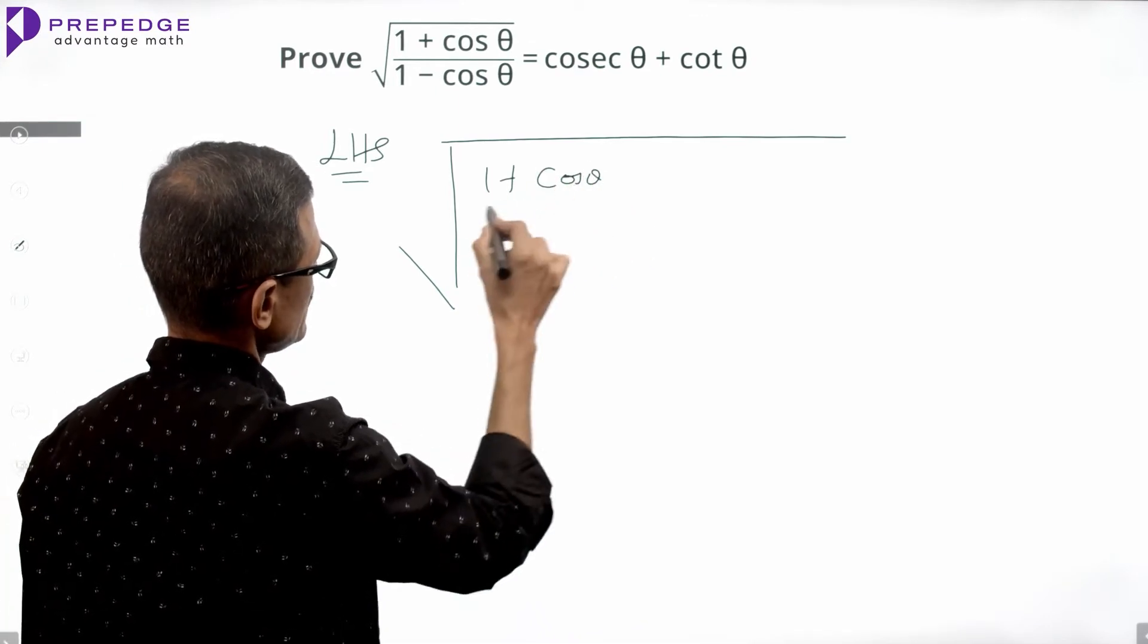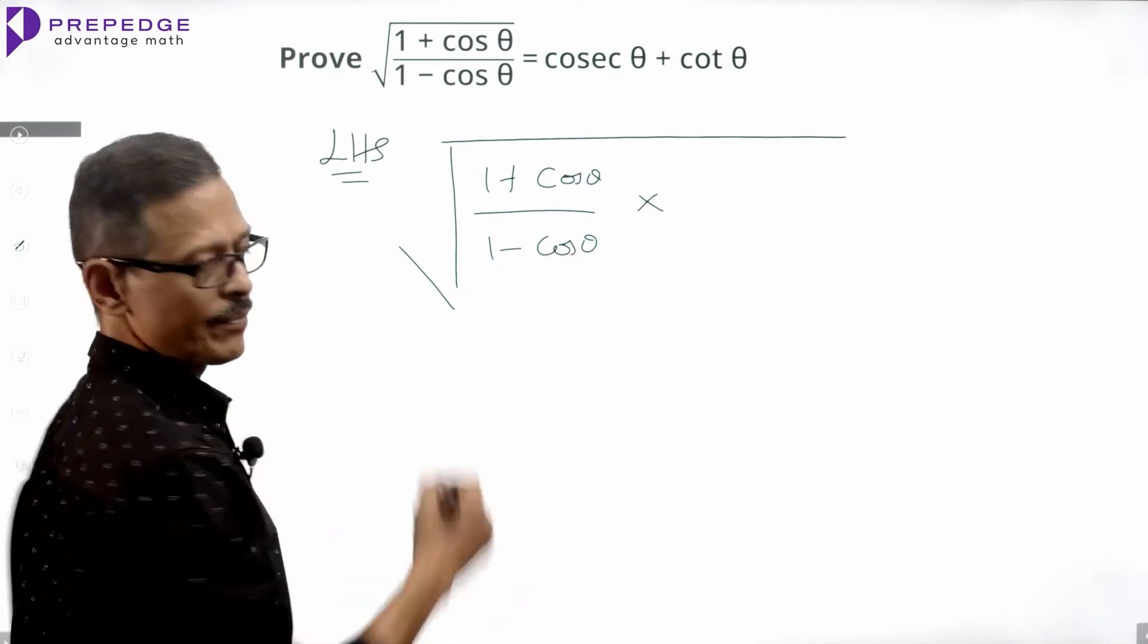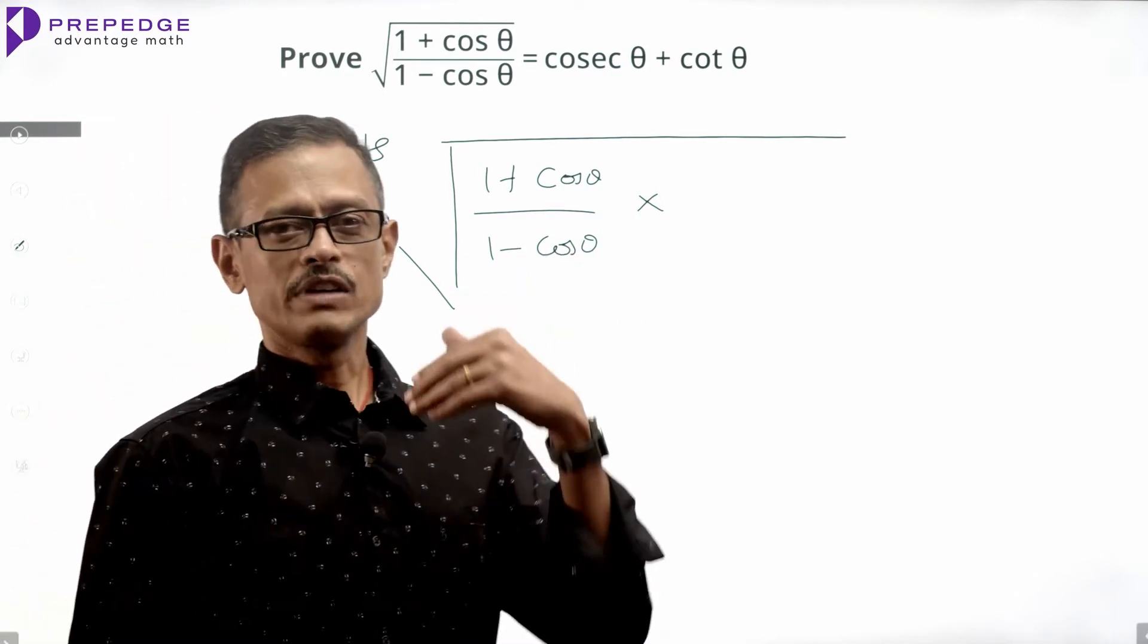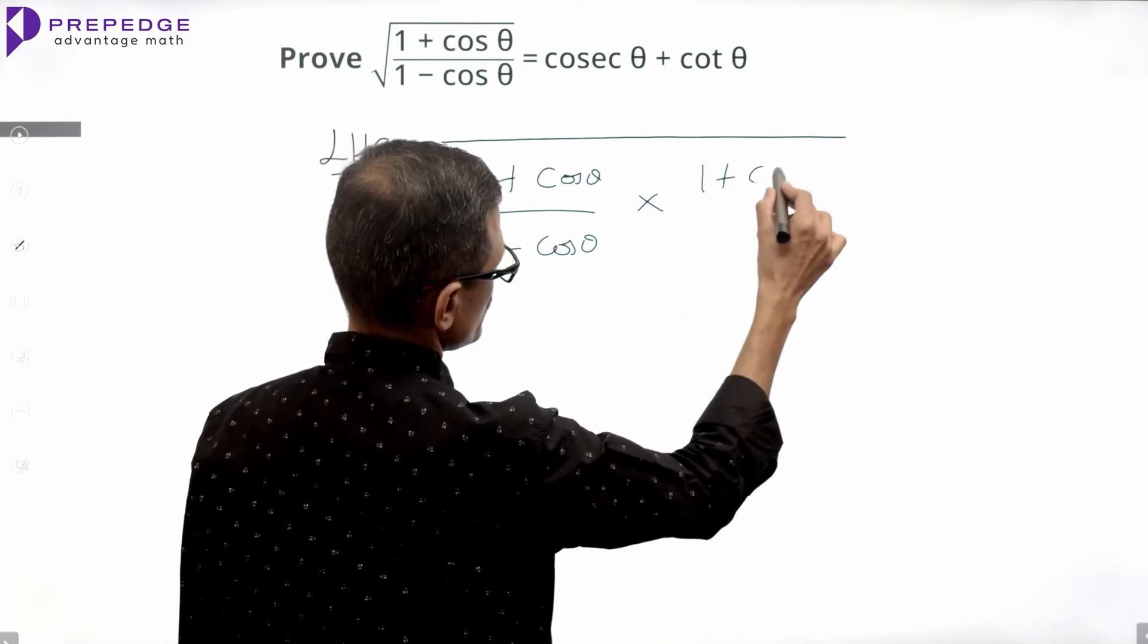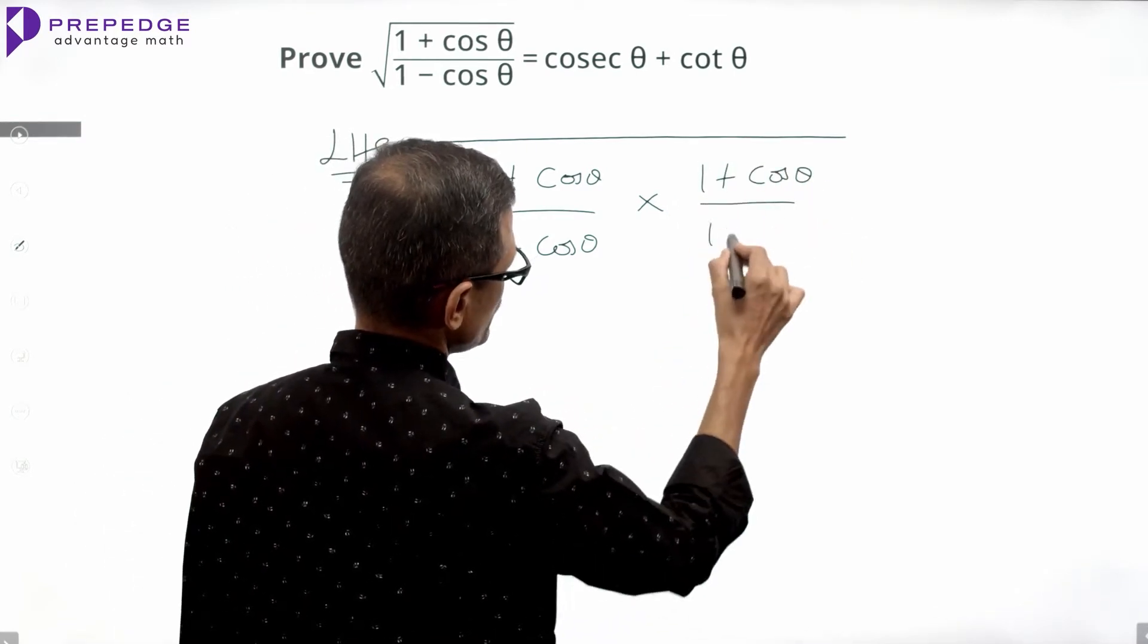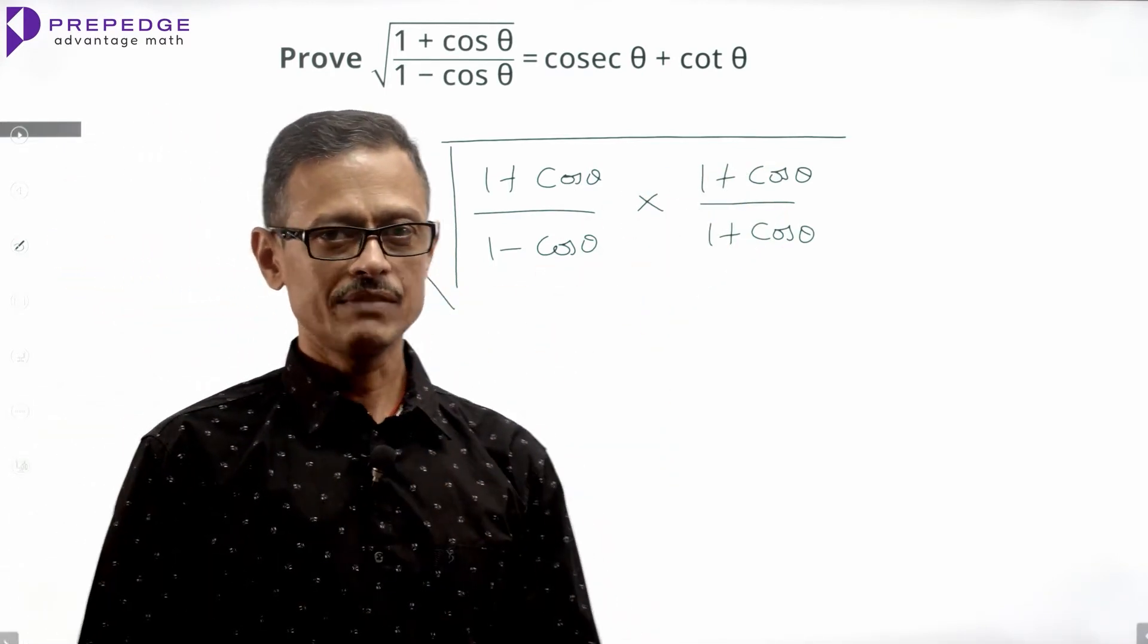The numerator here is 1 plus cos theta, denominator is 1 minus cos theta. The conjugate of the denominator is 1 plus cos theta. So we will multiply and divide it by 1 plus cos theta, 1 plus cos theta divided by 1 plus cos theta. The expression value doesn't change because you are multiplying and dividing it by the same value.